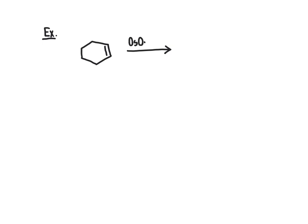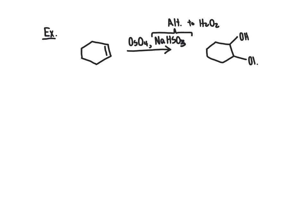For our second example, we're going to use a cyclic alkene as our starting structure to illustrate stereoselectivity. We'll use osmium tetroxide, and rather than using peroxide, we'll instead use sodium bisulfite, NaHSO3. The NaHSO3 is just an alternative to the peroxide — when you see this in the reaction mixture, expect the same behavior as if peroxide were present. We would expect the formation of a vicinal diol, with an OH group added to each of the two carbons.